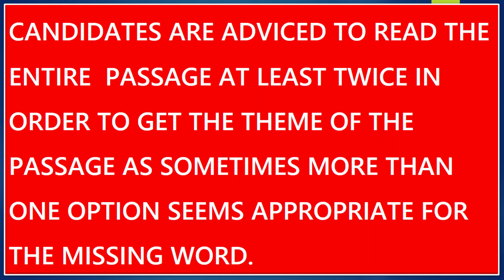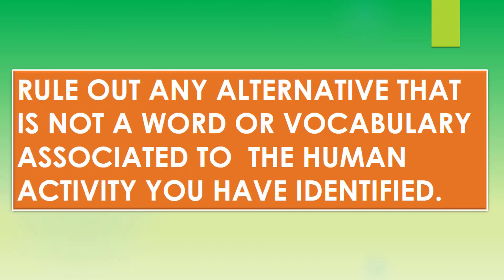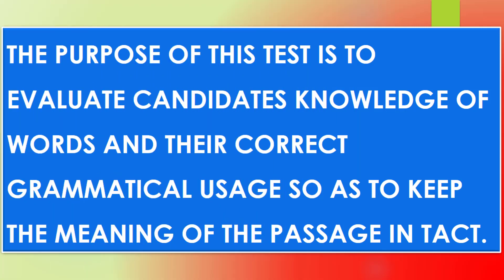While answering these questions, the candidate should read the entire passage at least twice in order to get the theme of the passage, as sometimes more than one of the options seems appropriate for the missing word. Reading the entire passage will help the candidate to choose the best option. Identify the field of human activity that was used to generate the passage — whether it uses vocabulary relating to sports, medicine, journalism, science, or law. Once you determine this, it becomes easier to choose the correct answers. Rule out any alternative that is not a word or vocabulary associated to the human activity you have identified. Remember, the purpose of this test is to evaluate the candidate's knowledge on words and their correct grammatical usage so as to keep the meaning of the passage intact.